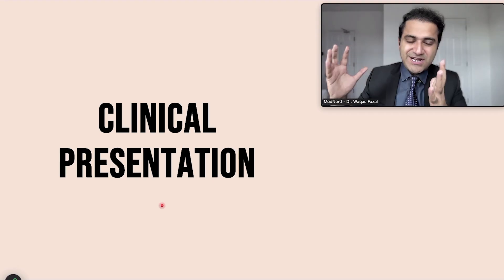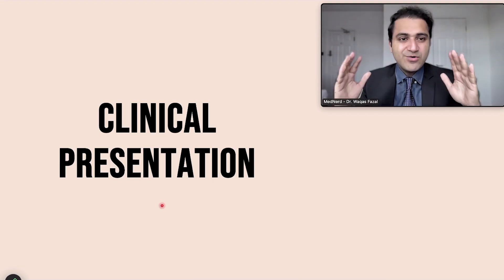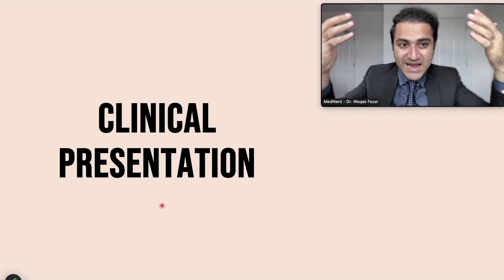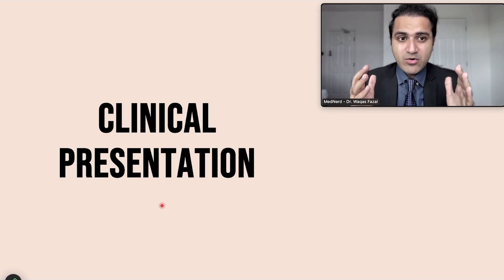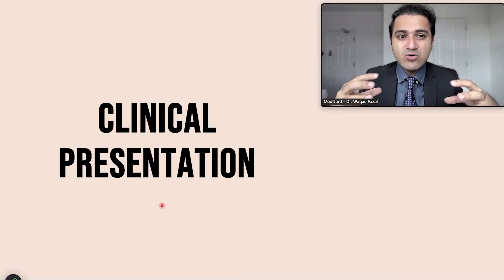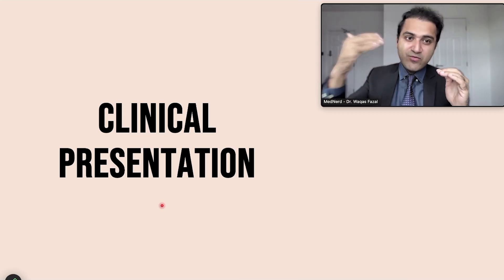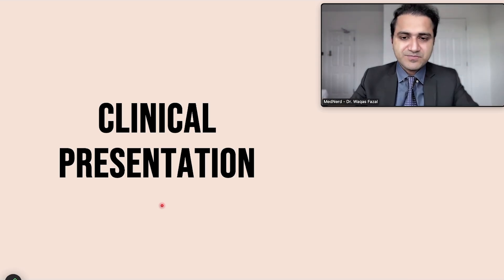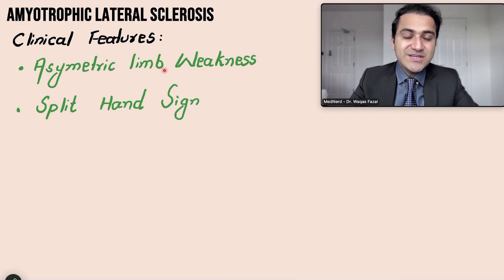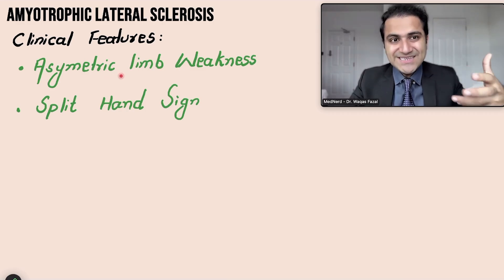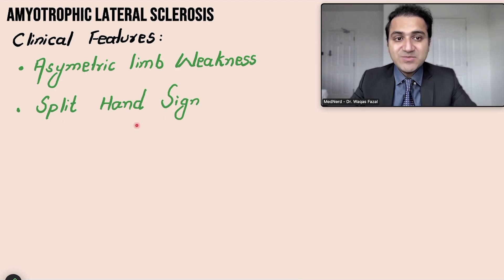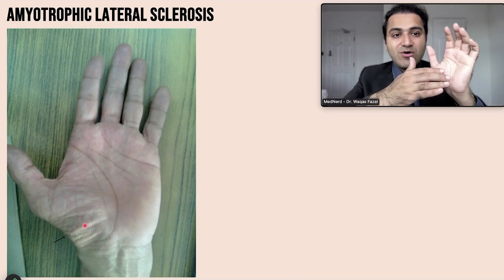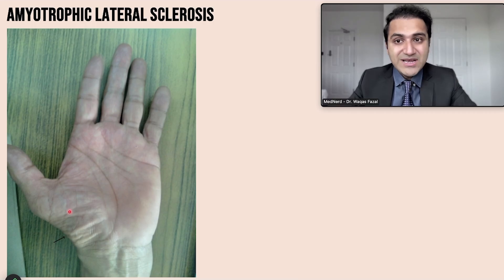Coming to the clinical presentation — when you understand the basic physiology, every sign and symptom makes sense because you know what is happening behind each symptom. In clinical presentation, you will see asymmetric limb weakness, as ALS usually presents asymmetrically. There is also the split hand sign, where atrophy of the thenar muscles takes place and you see loss of the thenar eminence — a sign seen in Amyotrophic Lateral Sclerosis.